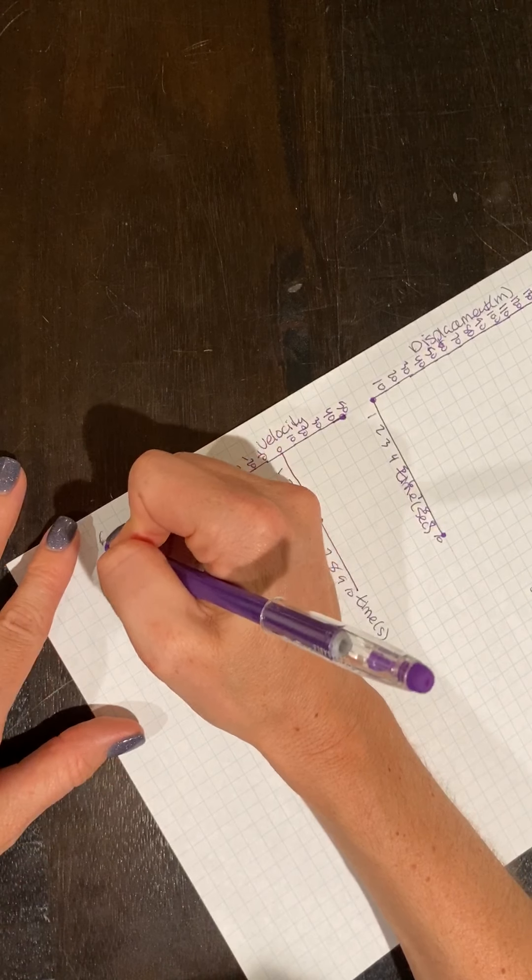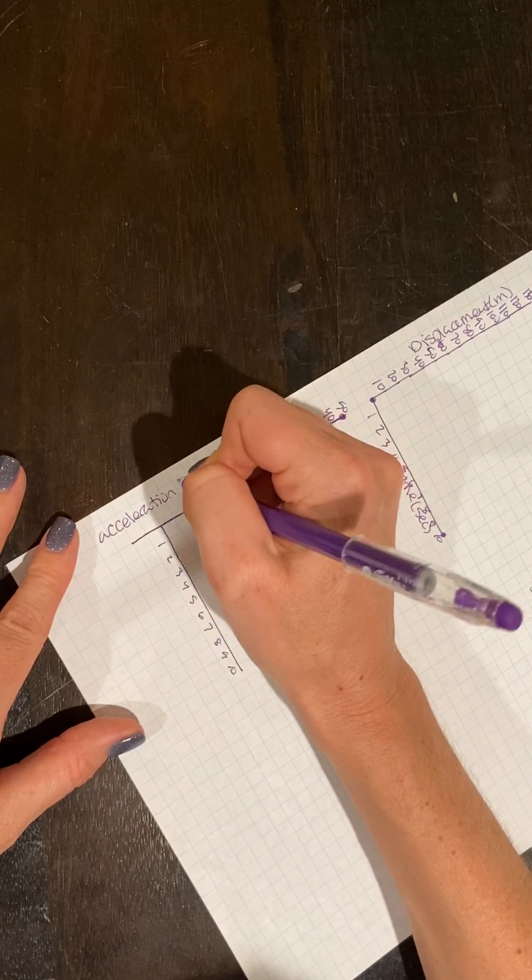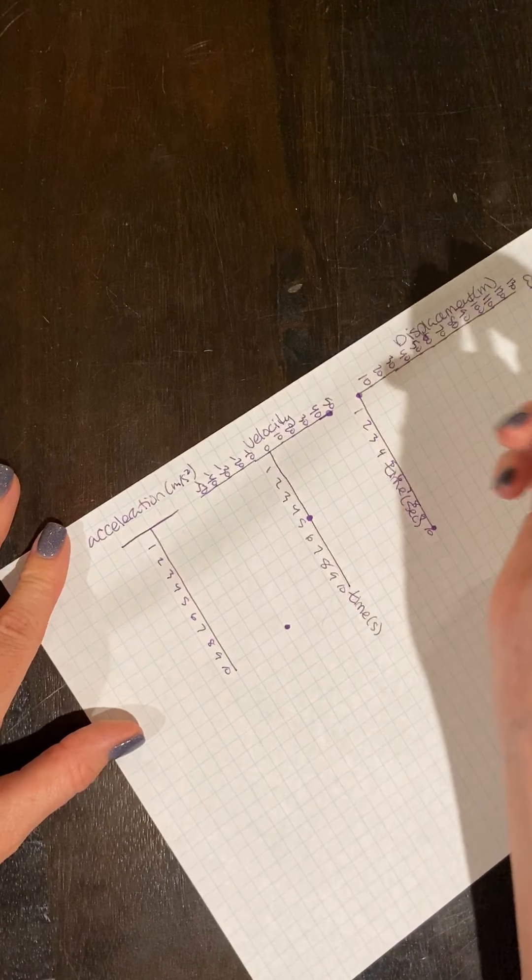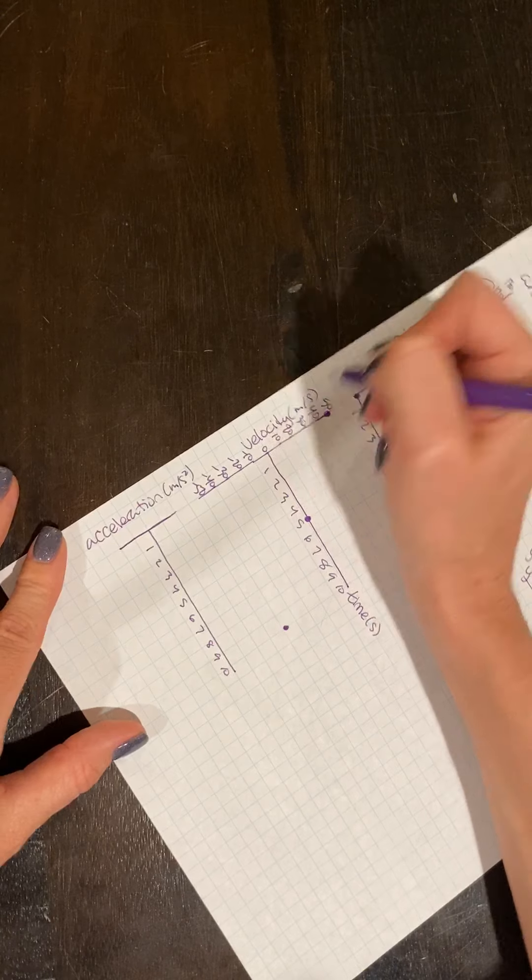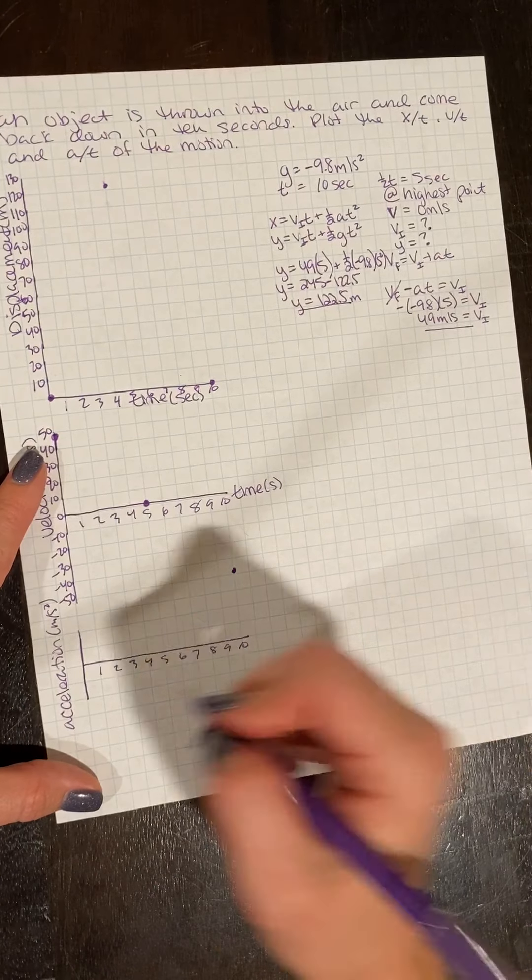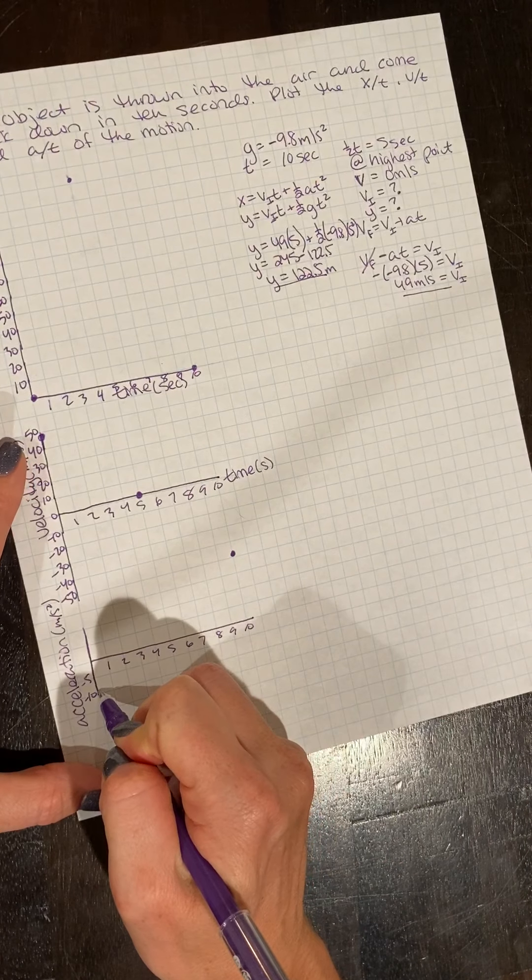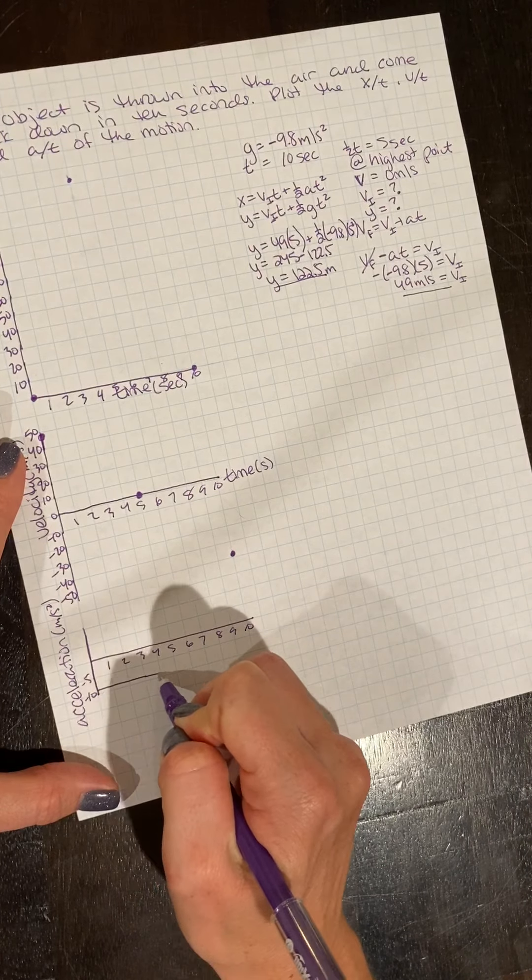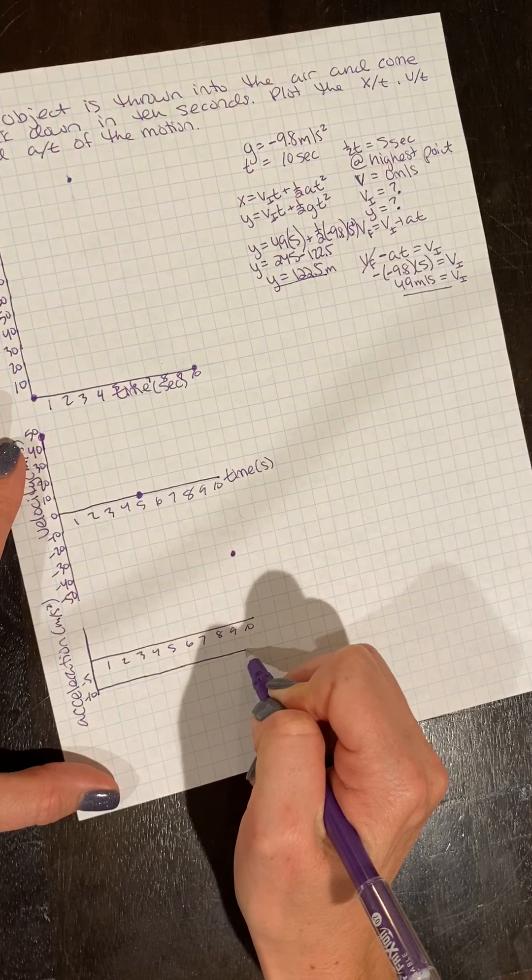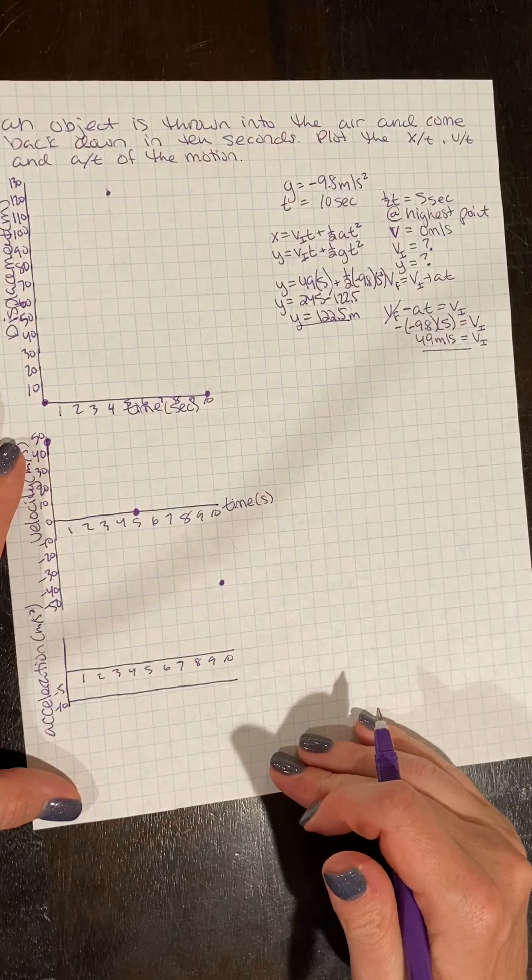And for my acceleration time graph, I'm accelerating at negative 9.8. So I know it's going to be a consistent negative 9.8. So there's no math needed for my acceleration graph.